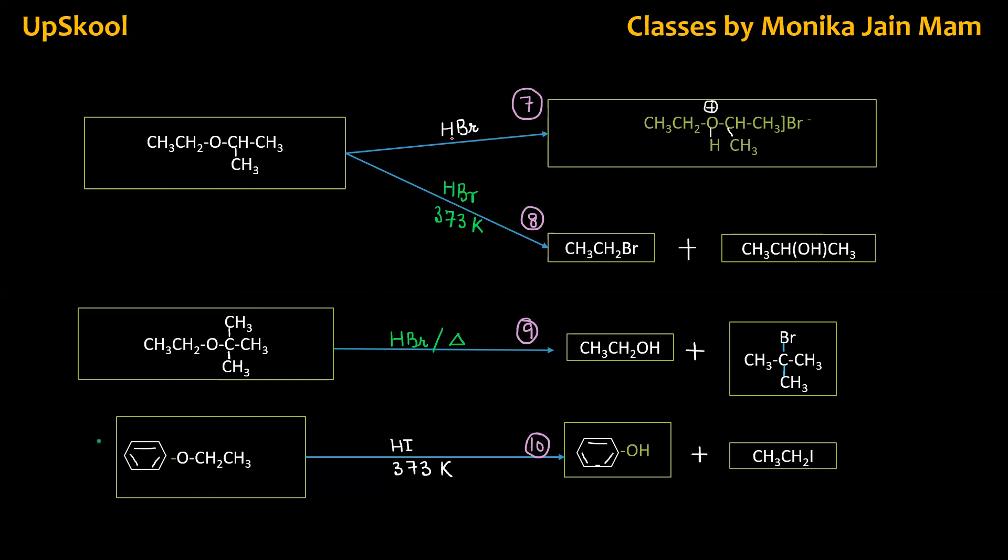So you have ether here. When you added HBr, what happened? This is to be seen carefully. I did not do cleavage here. It forms oxonium salt. CH3-O-CH2CH3 + HBr negative salt is formed. This salt is formed.